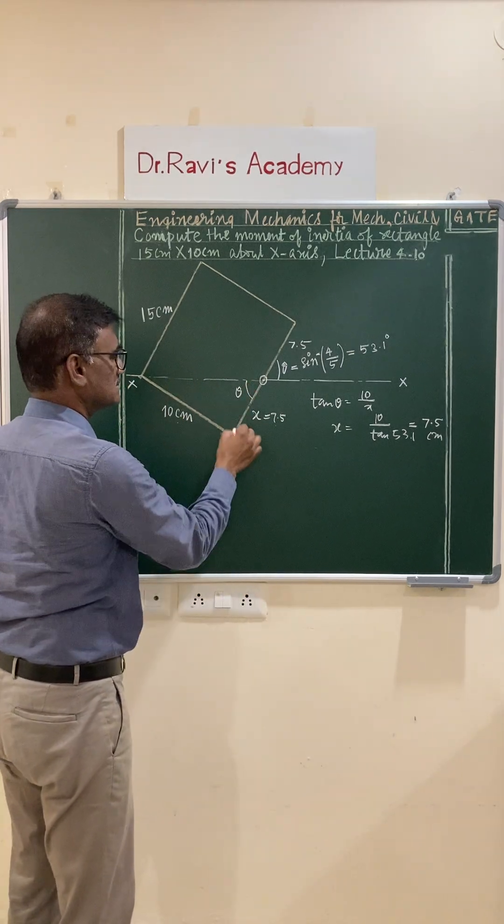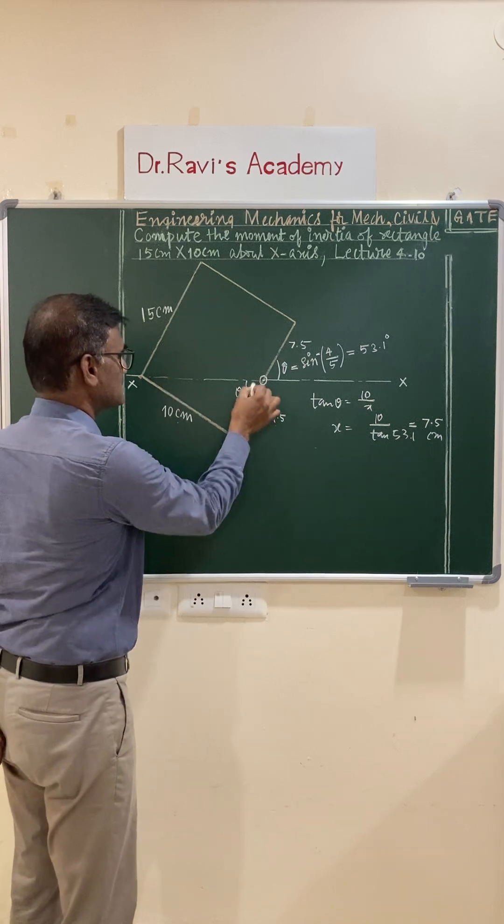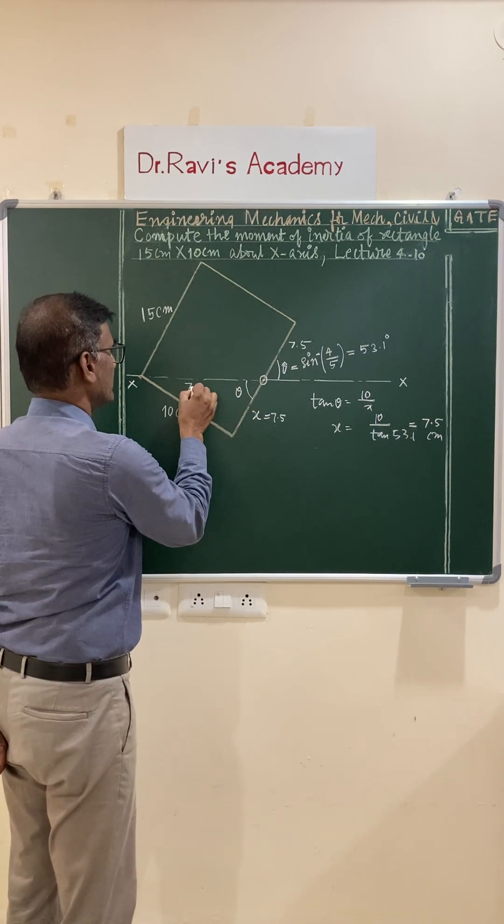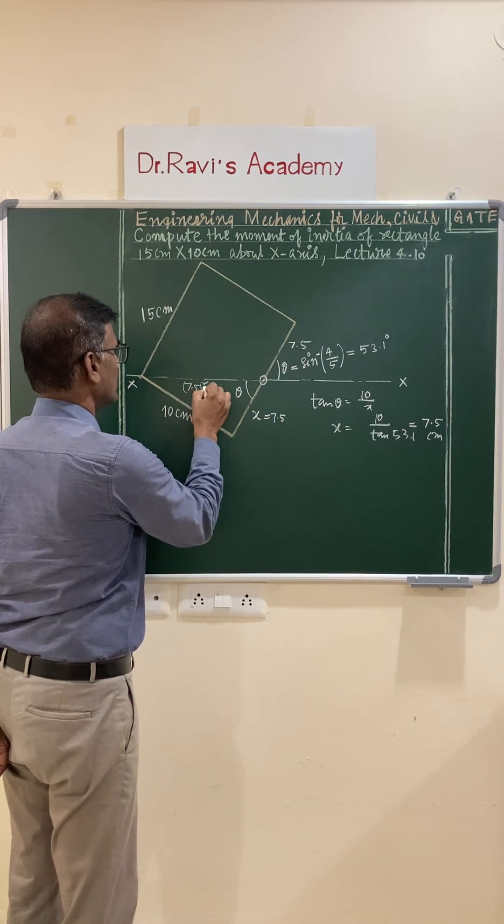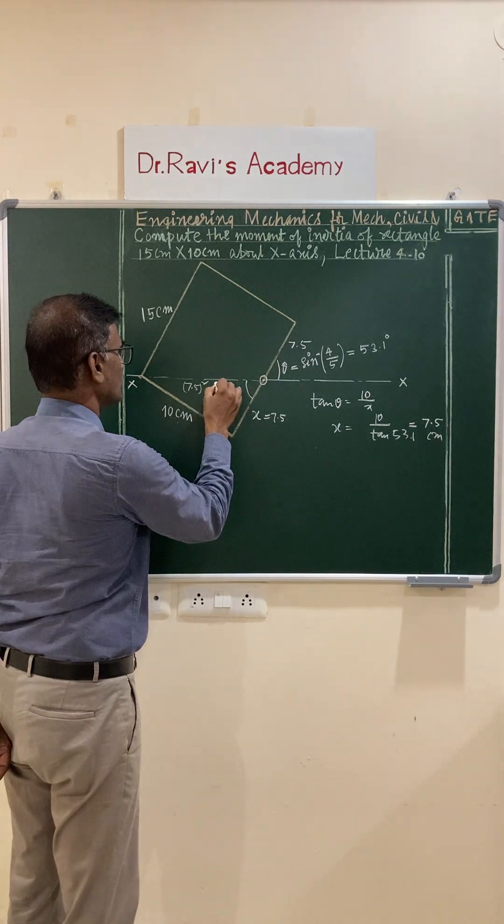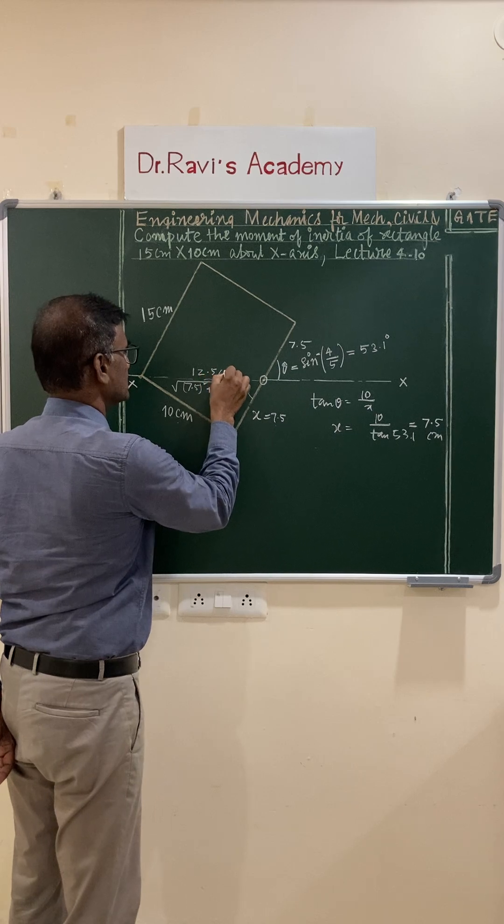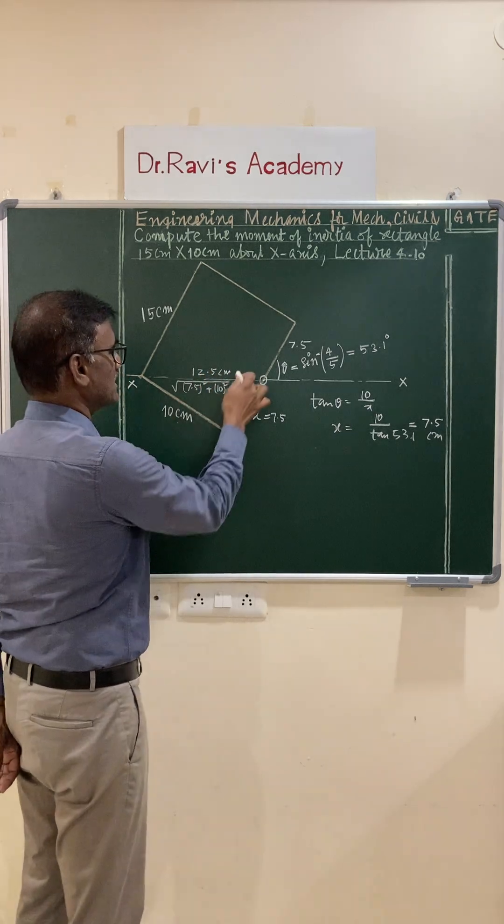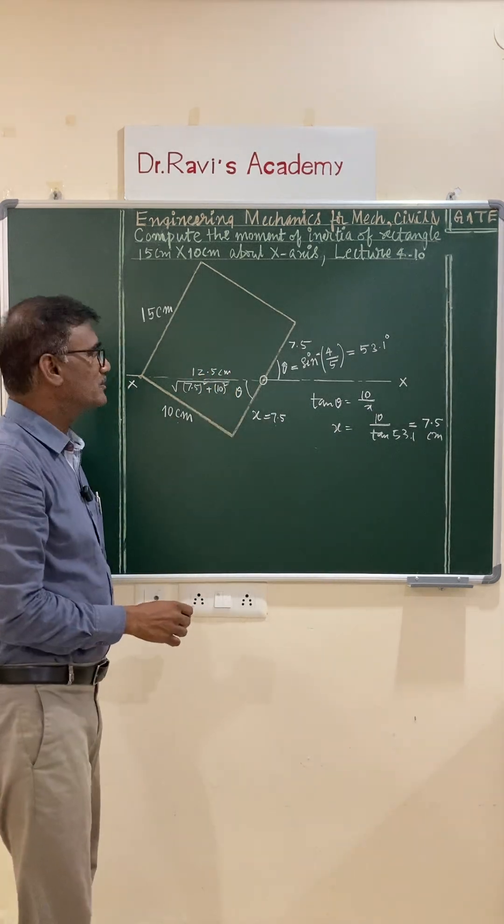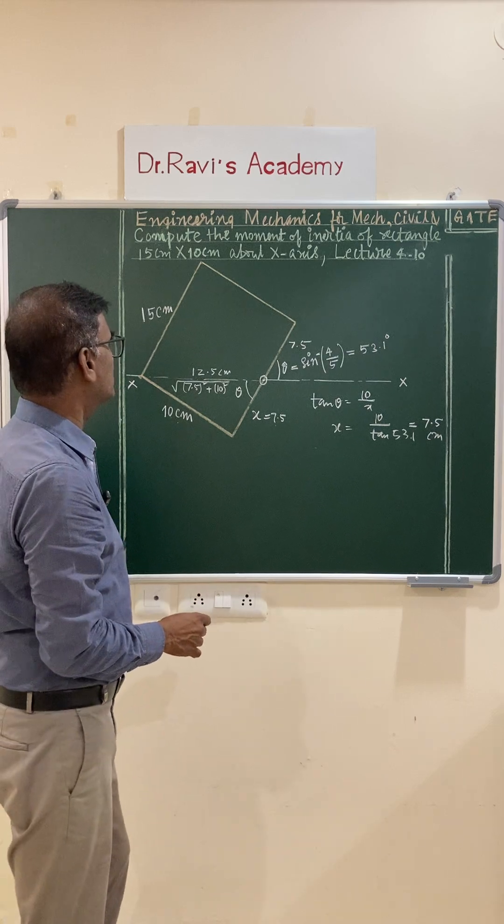Once you know this dimension and this dimension, this length, that is the hypotenuse of this right triangle, will be square root of 7.5 squared plus 10 squared. This value you're going to get is 12.5 centimeters. So from this triangle, this hypotenuse is 12.5. Observe carefully.